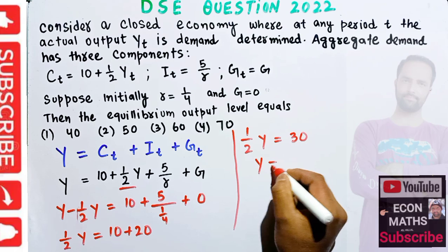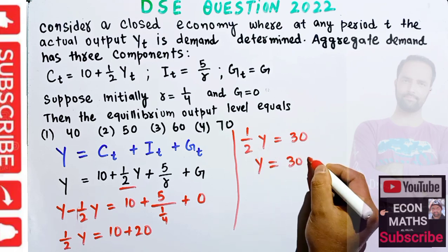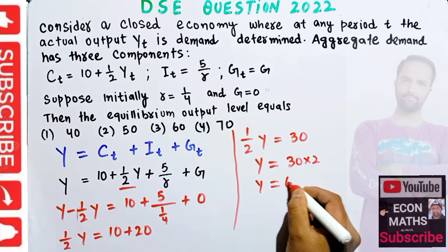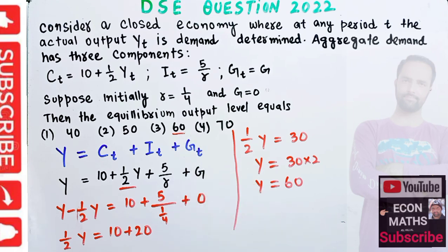Transposing this, it will get multiplied with 30, so equilibrium output level is equal to 60. The correct option should be 60. I hope I make myself clear.